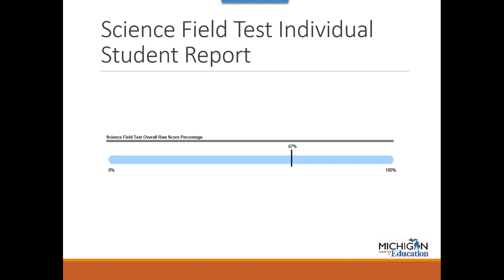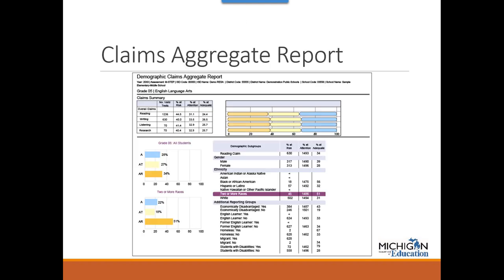The science field test individual student report displays the overall raw score percentage of points earned on the M-STEP science field test as a graphic. This is not proficiency information — it is raw score information based on field test items. Schools and districts should use locally developed science assessments when measuring student achievement based on Michigan's K-12 science standards. The claims aggregate report is for ELA and math only, as social studies has disciplines rather than claims.